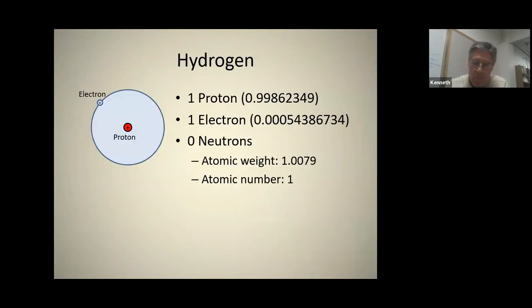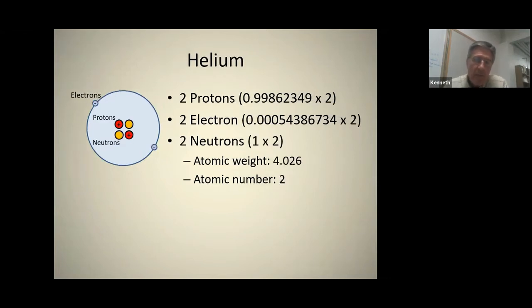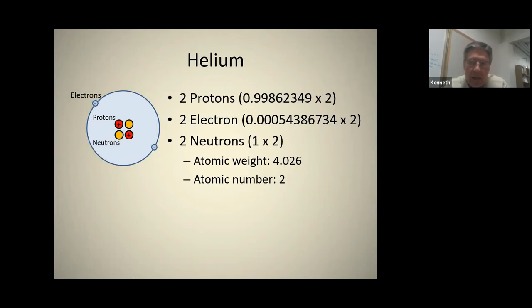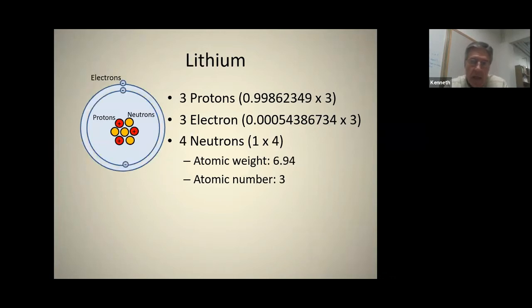So we look at hydrogen: we have one proton, one electron, and it has an atomic weight of just slightly over one. As you look at helium, the pattern is multiplied — two protons, two neutrons, two electrons. The electrons will always match the protons. But helium has a different energy than hydrogen. And as we look at lithium, we have three protons, three electrons, and four neutrons. And the weight changes, as does the energy, as does the intelligence.